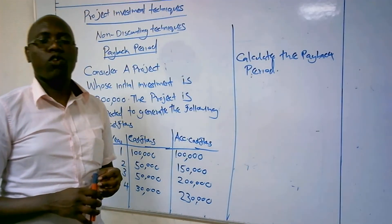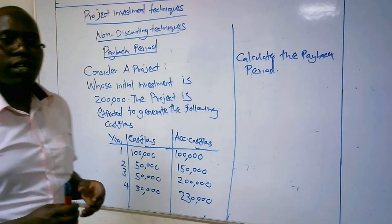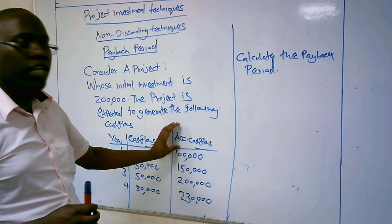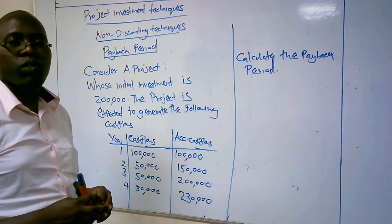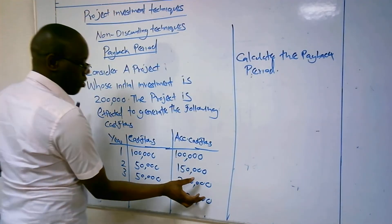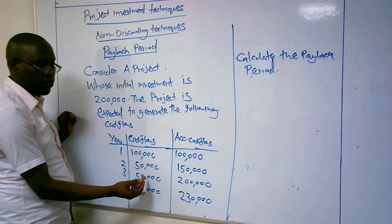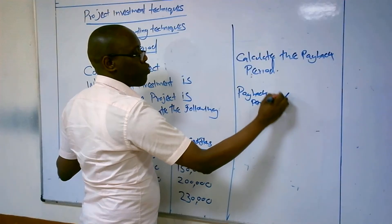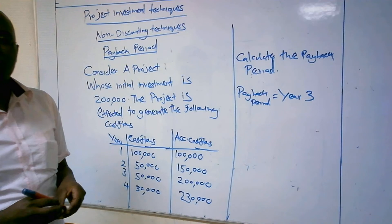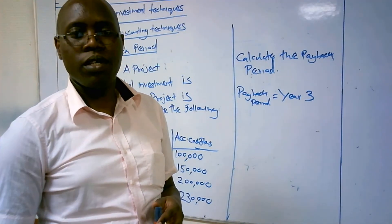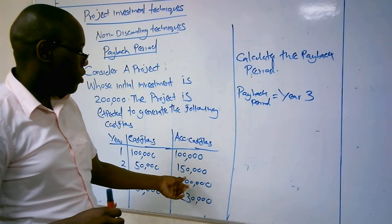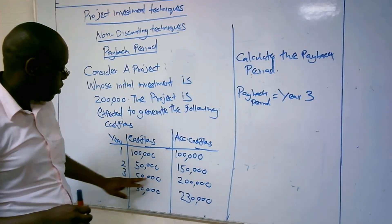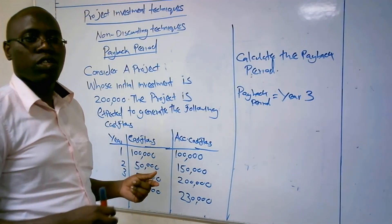You compare the accumulated cash flows with the initial investment, which is 200,000. You check the accumulated cash flows to see when you are likely to recover that initial investment. You can see that 200,000 appears in the third year. So the payback period equals Year 3. That is how you calculate the payback period — by comparing the initial investment with the accumulated cash flows to find when you recover your investment.